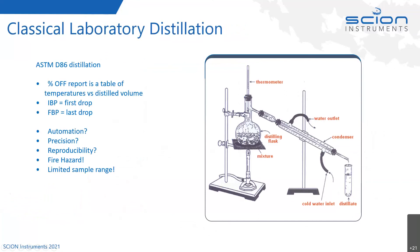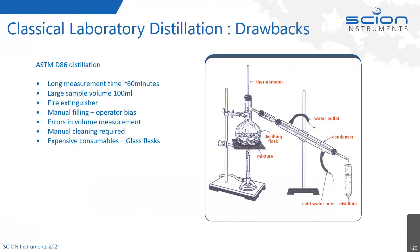In the chemistry lab, we could take a sample, place it in a distillation flask with a thermometer on top, heat the flask, with the exit connected to a condenser. We collect distillates in a measuring cylinder, measuring temperature and volume to create a TBP curve. However, there are drawbacks: limited automation, precision, and reproducibility issues; fire hazard; limited sample range; measurement time of about 60 minutes; large sample volume of 100 mL; safety concerns requiring a fire extinguisher nearby; operator bias in the manual filling process; and errors in volume measurement.